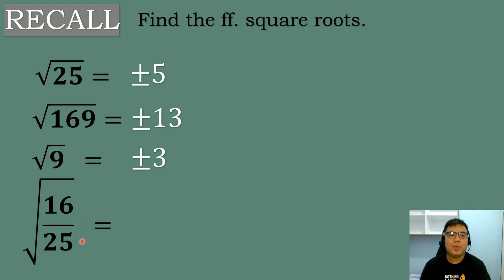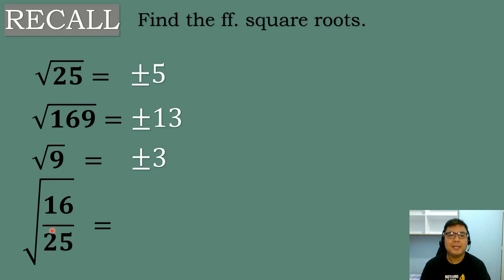Next: What is the square root of 16 over 25? This time our given is a fraction. To get the square root of a fraction, we get the square root of the numerator and the denominator separately. The square root of 16 is 4, since 4 times 4 is 16. The square root of 25 is 5, since 5 times 5 is 25. So the square root of 16 over 25 is positive or negative 4 over 5.